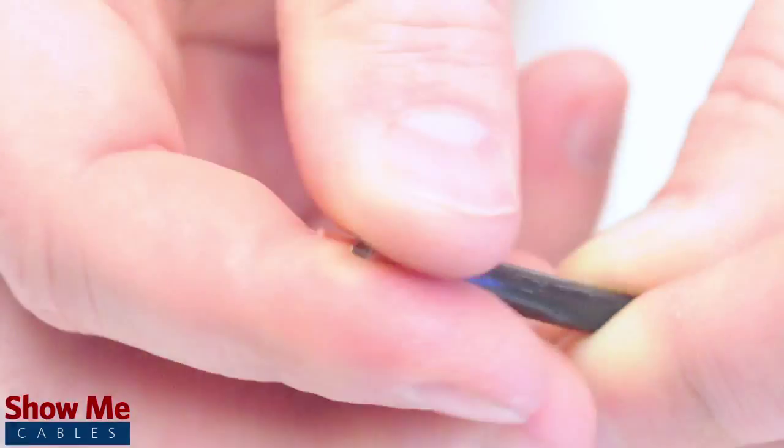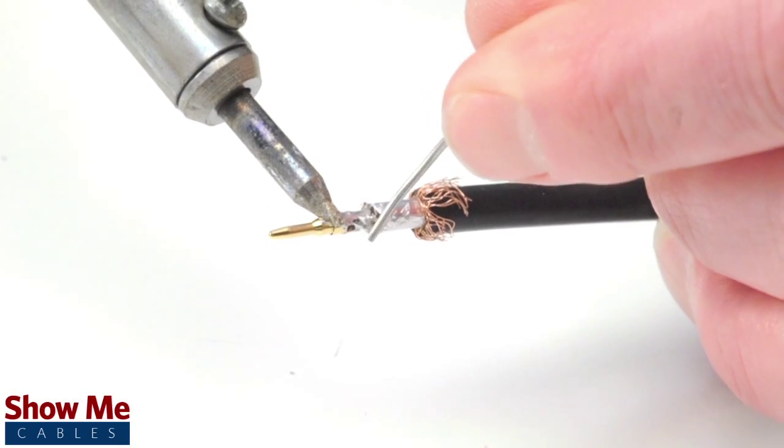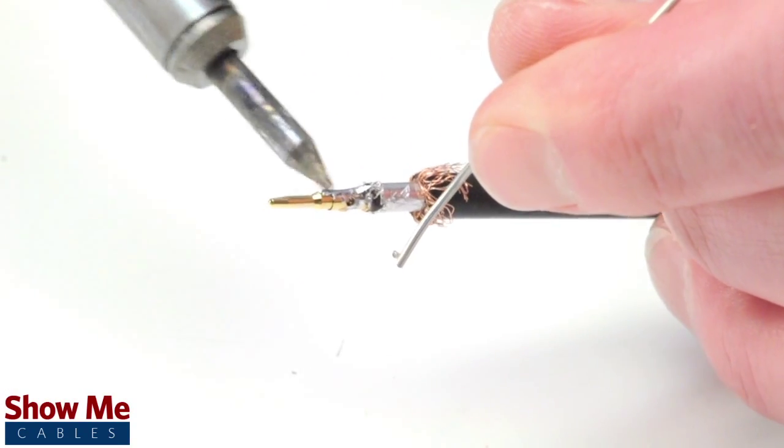Pull back the braided shield and insert the pin onto the center conductor. Solder the pin onto the center conductor and insert the connector housing over the cable.